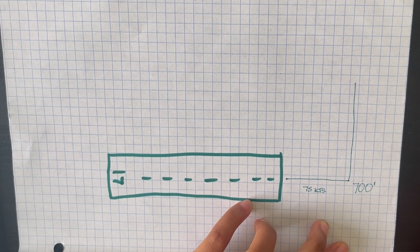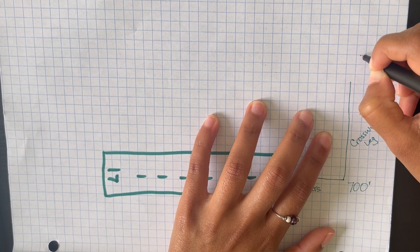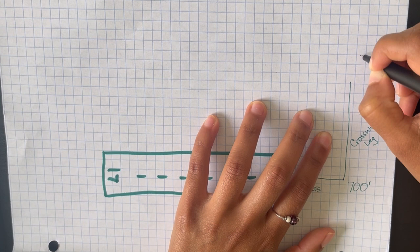Once you hit 700 feet you're going to take your first left turn onto your crosswind leg of the pattern. You're going to continue climbing, maintaining about 75 knots until you reach a thousand feet.